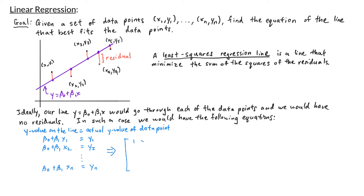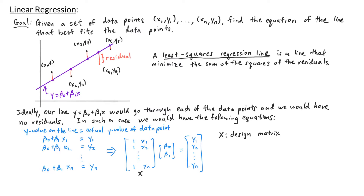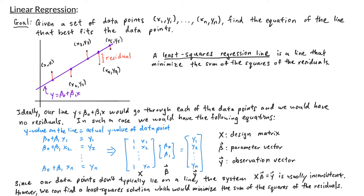In matrix form, we have the matrix [1, x1; 1, x2; ...; 1, xn] times the vector [beta-zero, beta-one], which equals the vector [y1, y2, ..., yn]. We call this matrix X, sometimes called the design matrix. We call the vector [beta-zero, beta-one] the vector beta, sometimes called the parameter vector. And we call the vector [y1, ..., yn] the vector y, sometimes called the observation vector. Since our data points don't typically lie on the line, the system X times beta equals y is usually inconsistent. However, we can find a least-squares solution that minimizes the sum of the squares of the residuals.